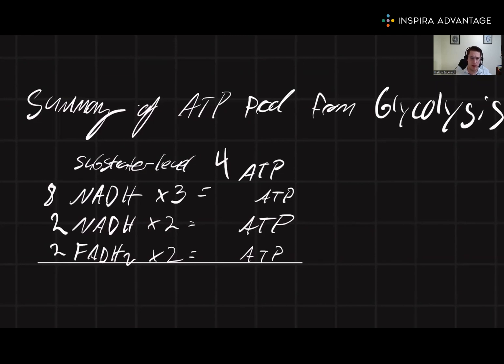So if we do this math, 8 times 3, we get 24. 2 times 2 is 4. And 2 times 2 is 4. This is going to give us a net total of 36 ATP.